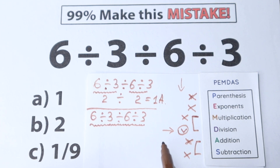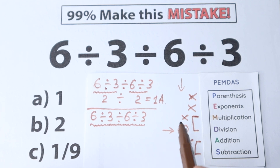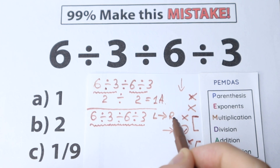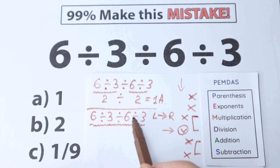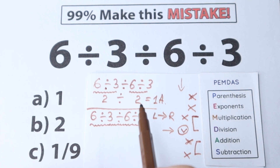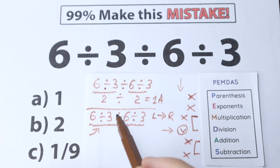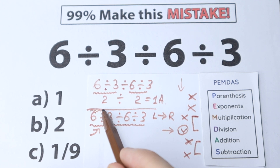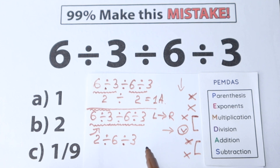What is the correct order? As I mentioned, we go from left to right. According to PEMDAS, we scan for the first sign from left to right. The first sign is this one — so the first step is 6 divided by 3, which equals 2. Now we have 2 divided by 6, and divided by 3.